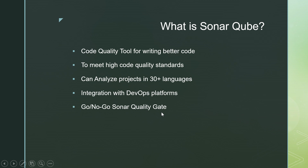SonarQube provides a quality gate — a go or no-go mechanism. A quality gate can be created with all the code quality standards set for a project. A team lead can create a quality gate and set all the standards they want every team member to follow. When team members complete their code, it can be checked on the SonarQube server against this quality gate.